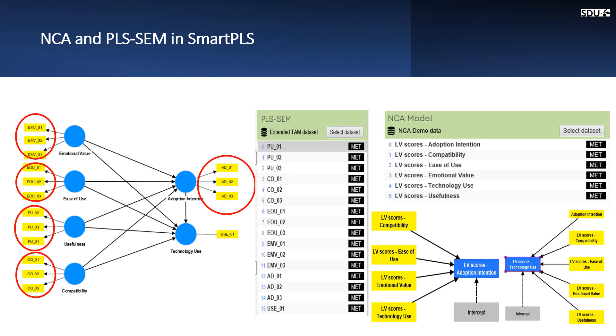The third thing to be noticed is that for each necessary condition analysis, we can only have one dependent variable. In our case here, we have two dependent variables. We can evaluate them together in the PLS-SEM model, but for the NCA, these two NCAs need to be performed individually.